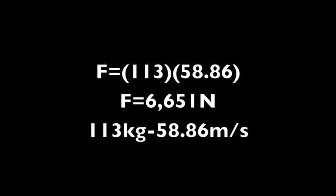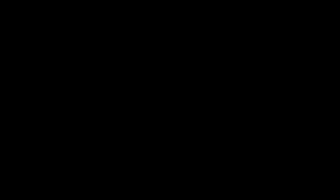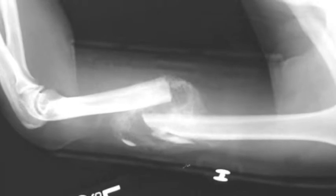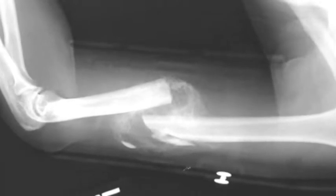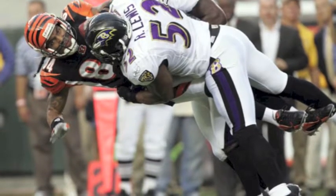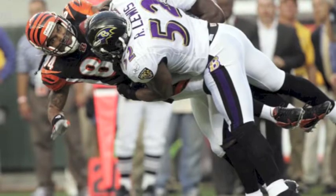Newtons is the SI unit for force. The 6,651 newtons of force is enough to break human bones, and you only need 4,000 newtons to fracture a bone. Ray Lewis's hit has another 2,000 newtons of force which can cause more damage.